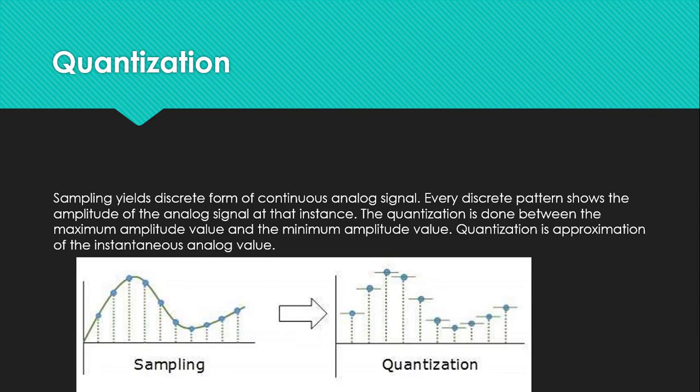Quantization: sampling yields a discrete form of continuous analog signal. Every discrete pattern shows the amplitude of the analog signal at that instance. The analog signal is transformed through sampling into discrete patterns. Each pattern represents the amplitude of the analog signal at that instant.